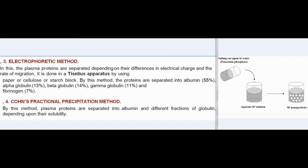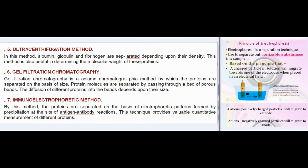(4) Cohn's fractional precipitation method: Plasma proteins are separated into albumin and different fractions of globulin depending upon their solubility. (5) Ultracentrifugation method: Albumin, globulin, and fibrinogen are separated depending upon their density. This method is also useful in determining the molecular weight of these proteins.